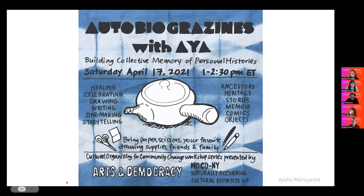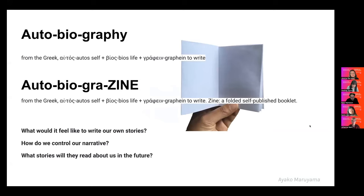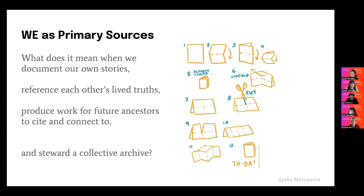Zines have so much legacy in queer and Black communities who subvert notions of publishing and the red tape that comes with it, in order to put their stories on paper so they last. The autobiography zine idea: writing your autobiography with your family one zine at a time. What would it feel like to write our own stories, control our narrative, and what stories will they read about us in the future? This questions the notion of primary source — what does it mean when we document our own stories, reference each other's lived truths, produce work for future ancestors to cite, and steward a collective archive?